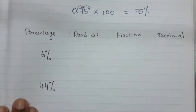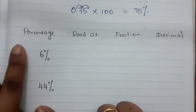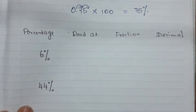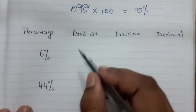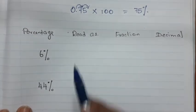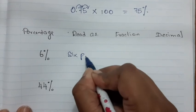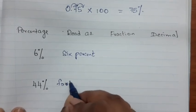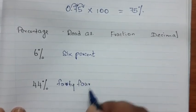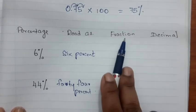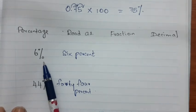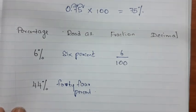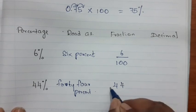Now let me summarize what we have learned. I have written two percentages: 6% and 44%. These are read as '6 percent' and '44 percent.' Since the percentage symbol means out of 100, they can be written as fractions: 6/100 and 44/100.